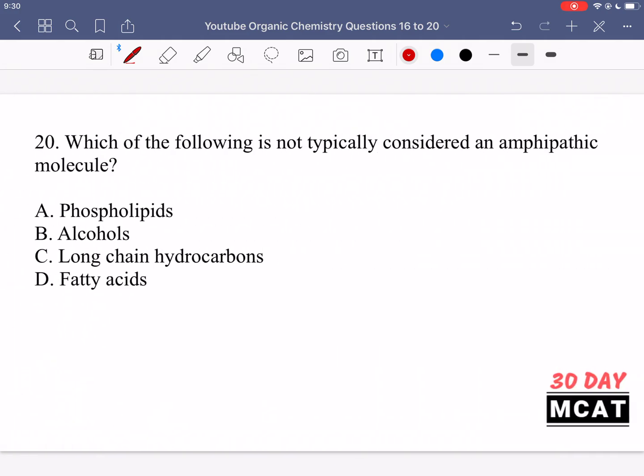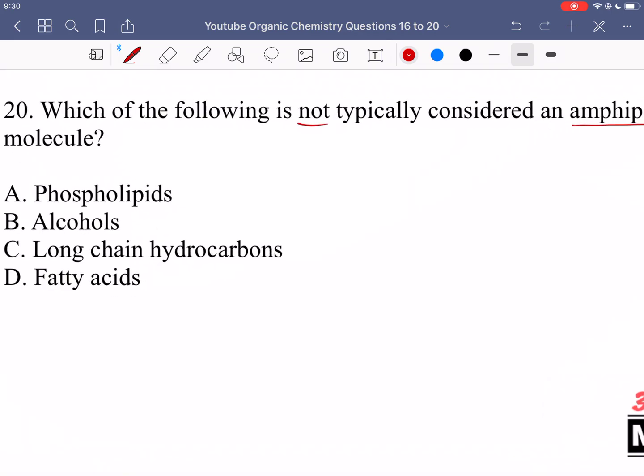Moving on to question 20, we're asked which of the following is not typically considered an amphipathic molecule. So for something to be amphipathic, that means that it has both polar characteristics and non-polar characteristics. So within one molecule, it has both of these groups.